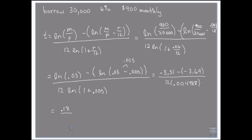And then 12 times 0.004988 is 0.059856. And then I do 0.18 divided by 0.059856. 3 years. That's because we have a high payment.